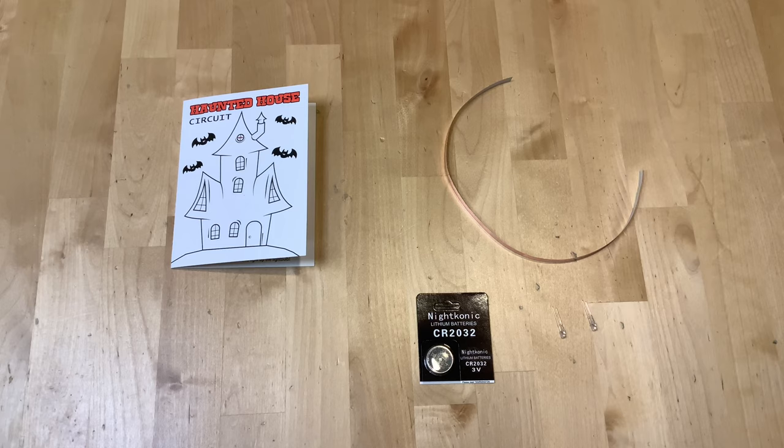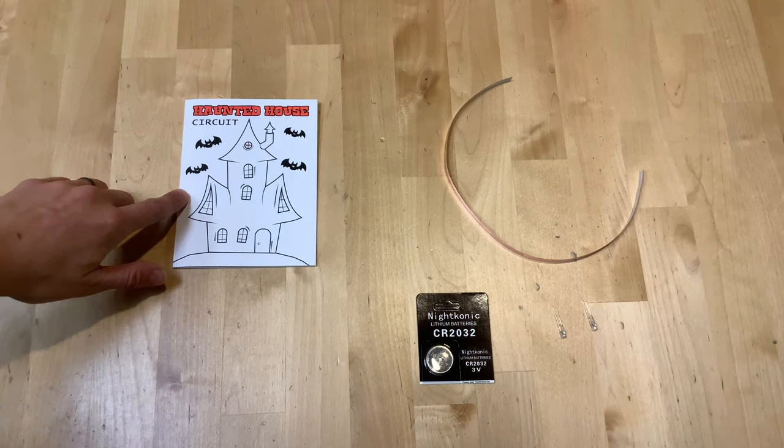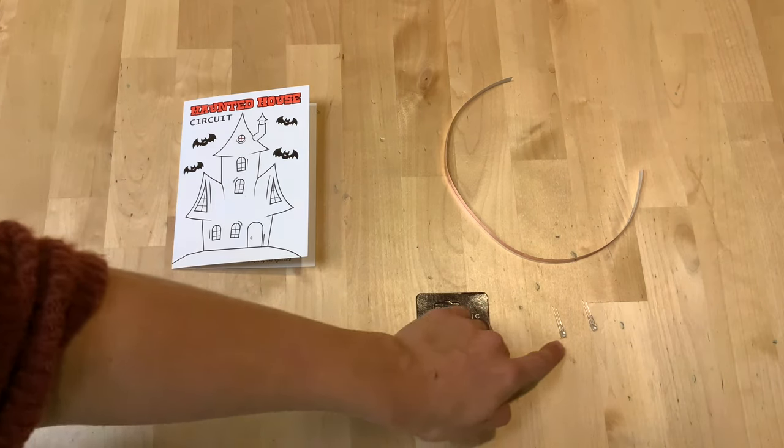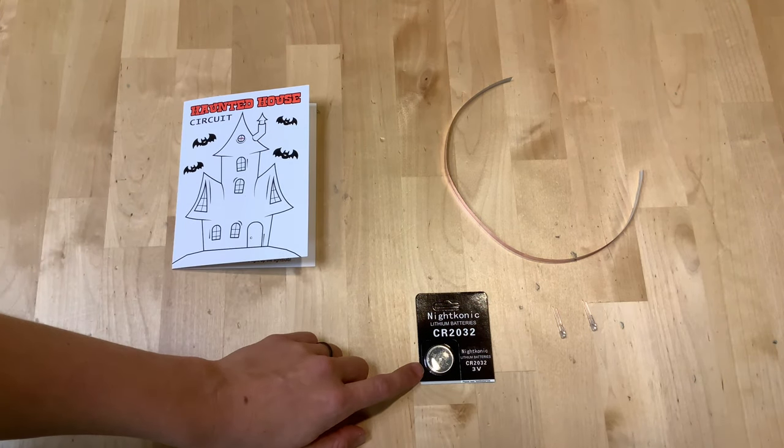In your Take and Make kit you should have a haunted house circuit card, some copper tape, two LED light bulbs, and a battery.